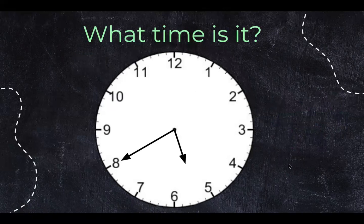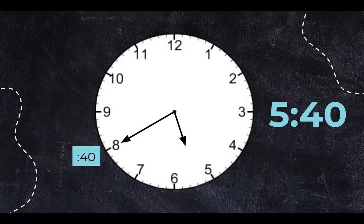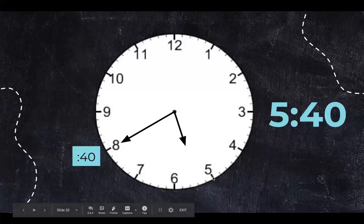What time is it on the clock? It is five forty. Zero, five, ten, fifteen, twenty, twenty-five, thirty, thirty-five, forty.